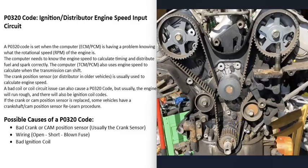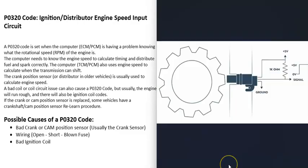In older vehicles, they used to use a distributor to send out the spark at the right time. But in newer vehicles, this is now controlled by the computer. The computer controls when to send out spark and when to turn on a fuel injector and send fuel into a cylinder, so it needs to know the timing of the engine and track it to do its calculations.